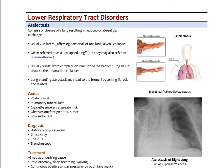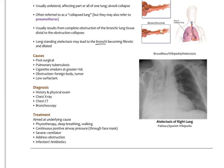In long-standing atelectasis, the bronchi can become fibrotic and remain dilated. Causes include post-surgical patients, TB used to be a major cause, cigarette smokers are at greater risk from foreign body obstruction or tumors, and low surfactant. On imaging, you can see a normal left lung with good air spaces and angle at the diaphragm, versus the affected side showing all white — the entire lung has collapsed. Assessment uses history, physical exam, chest X-ray, chest CT, and bronchoscopy.